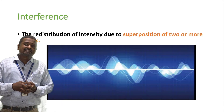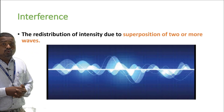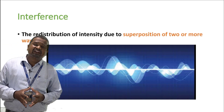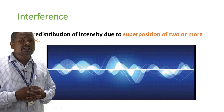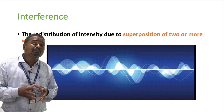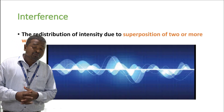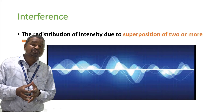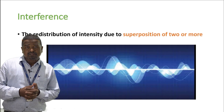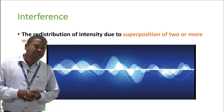Now let's study the definition of interference. Interference is nothing but the redistribution of intensity of light due to the superposition of two or more waves. When there is superposition of two or more waves, interference occurs.